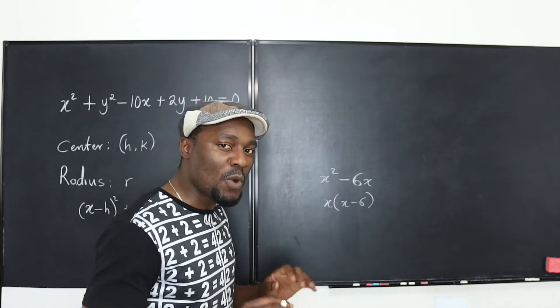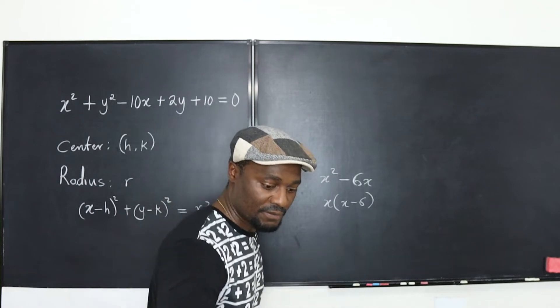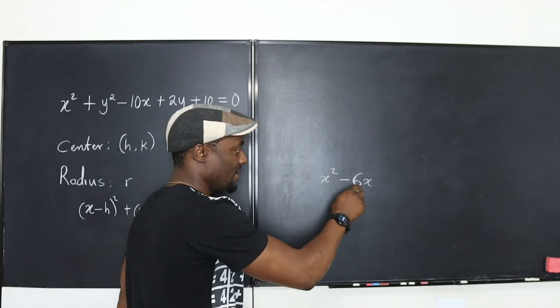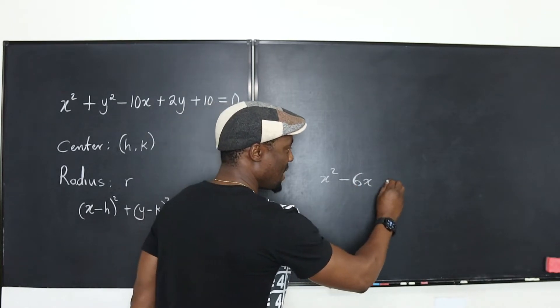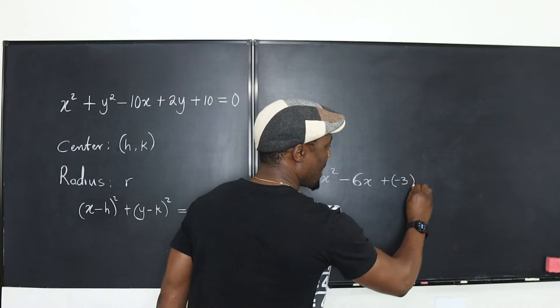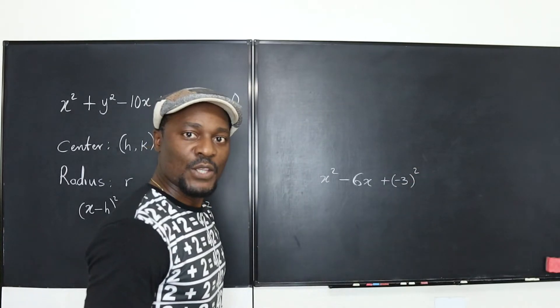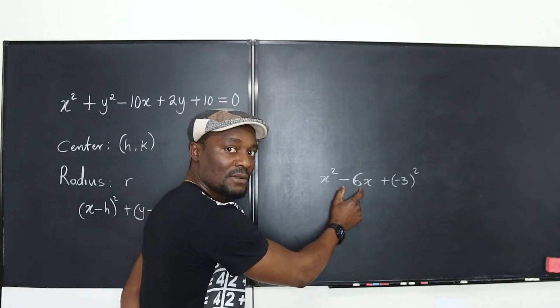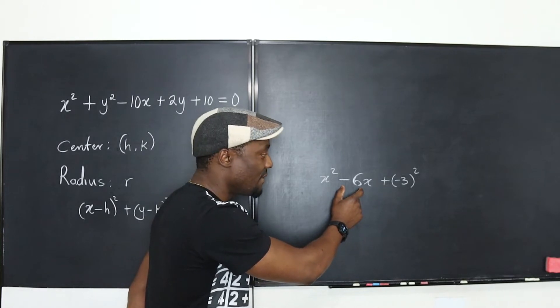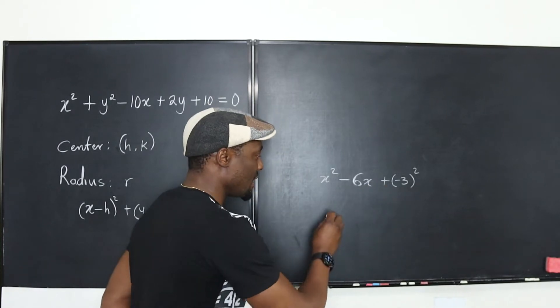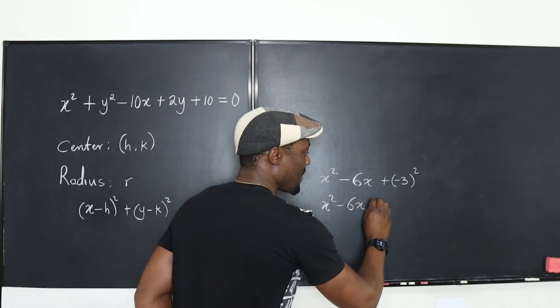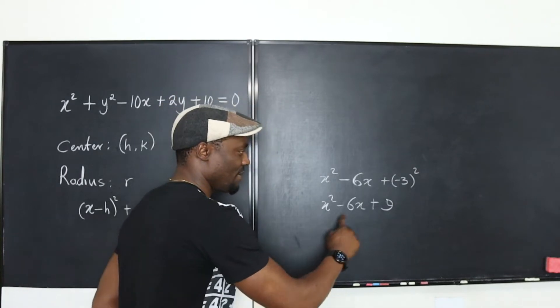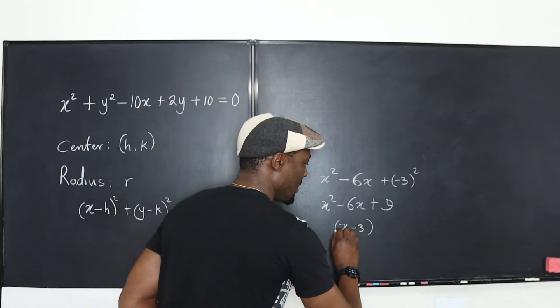How do you make it a square? What we do is take half of this coefficient, so half of -6 is -3, and then square it. If you take half and square it, you end up with x² - 6x + 9. Now this is a perfect square. How do I know? Because if you factor this, you get (x - 3)².